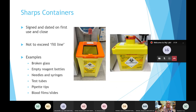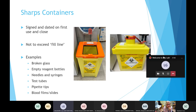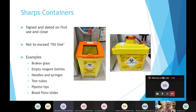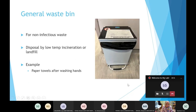We have sharps containers in two different sizes. They must be signed and dated when first opened and when closed. We close them when the contents reach the fill line — they should never go above it. Examples of sharps waste include broken glass, empty reagent bottles, needles and syringes, test tubes, pipette tips, blood films, and slides.